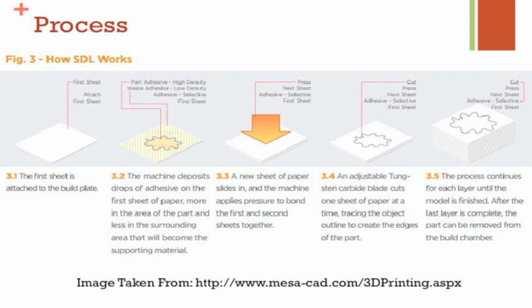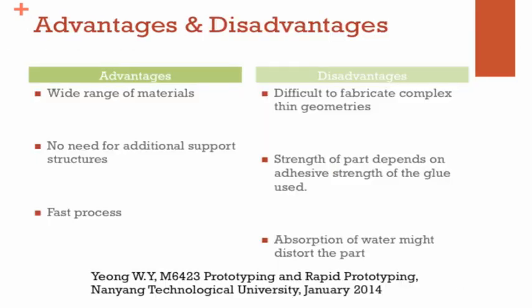Next, the sheet is cut either by a tungsten carbide blade or a carbon dioxide laser, in a square fashion. Within the cross-section, the cuts are finer, and on the outside of the cross-section, the squares are bigger. This process repeats itself and eventually you form a paper model or 3D model.